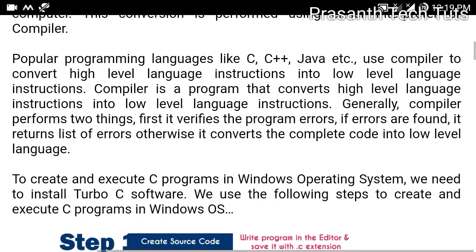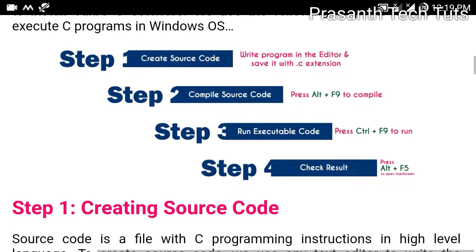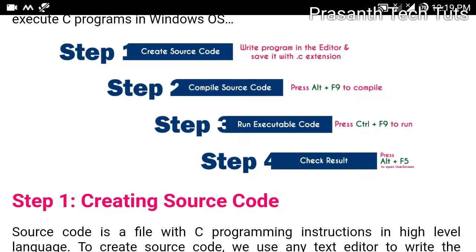Now we will check the steps. Friends, we will install the Windows operating system. The first step is create source code. The second is compile source code. The third is run executable code. Fourth, check result. These are the four steps.